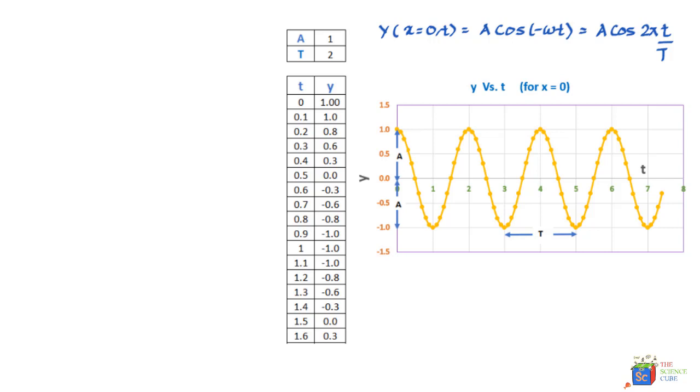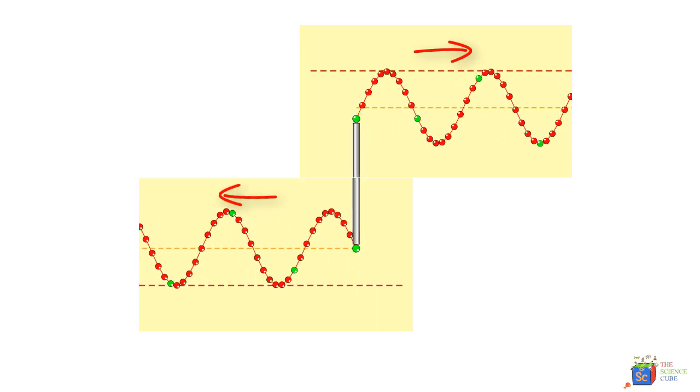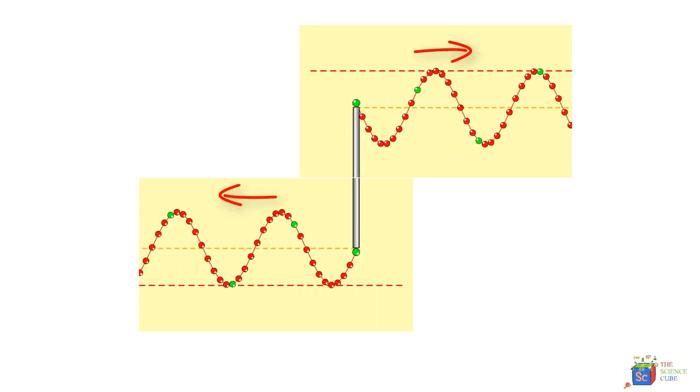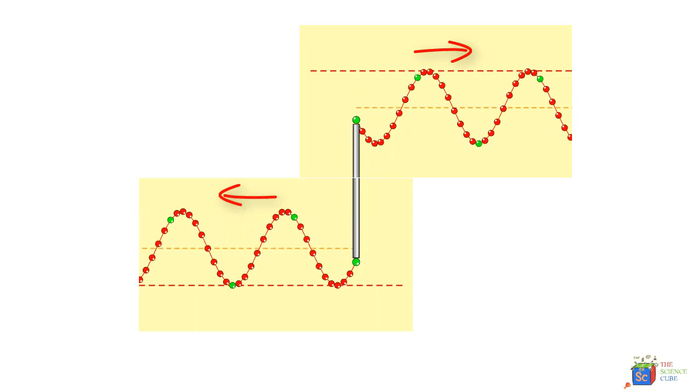While this graph over here gives the y position of a point at various times, and we've chosen the point at x equal to 0 to make this graph. So you can plot the same graph for other points on the string as well. So that brings us to another interesting part in this lesson, which is: what about waves moving in the negative x direction?